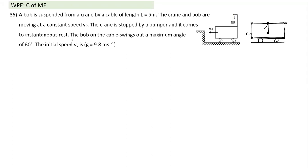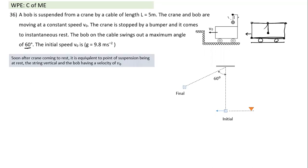The problem: a bar of length 5 m is suspended from a plane crane moving with speed v₀. The crane comes to an instantaneous stop, and the cable swings to a maximum angle of 60°. From the angle and length we can calculate the initial speed of the crane.